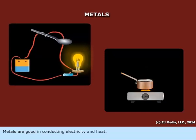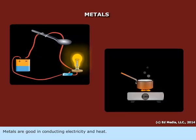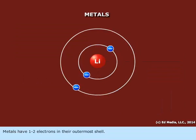Metals are good in conducting electricity and heat. Metals have one to two electrons in their outermost shell.